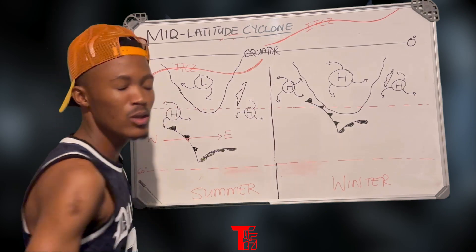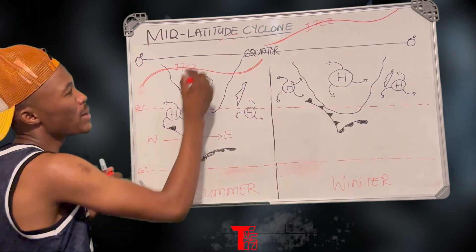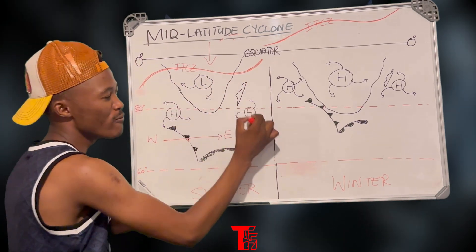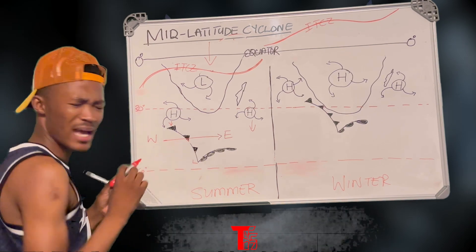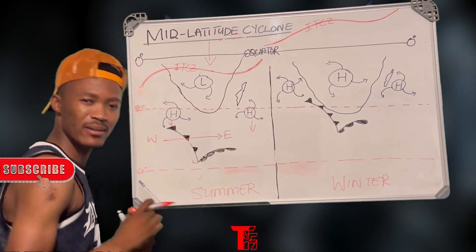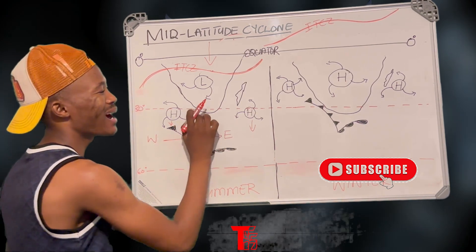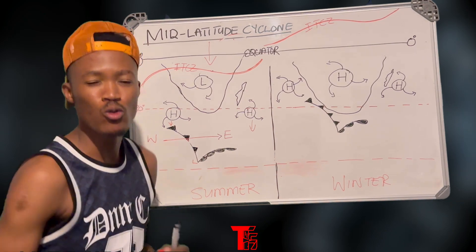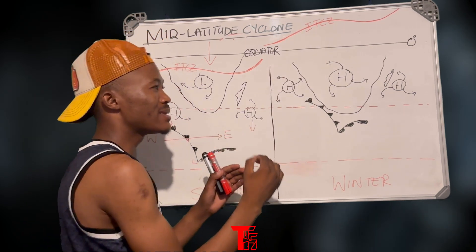When it is summer in the southern hemisphere, the ITCZ migrates southwards, and as a result the pressure belts also move further south. This pushes our mid-latitude cyclone further away from the interior. So as this system moves eastwards from west to east, the cyclone will not touch the interior. As a result, in summer we are not impacted by the mid-latitude cyclone.